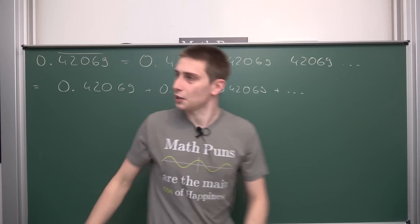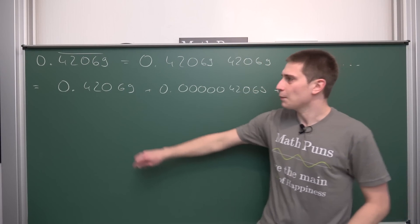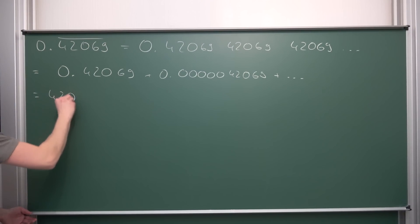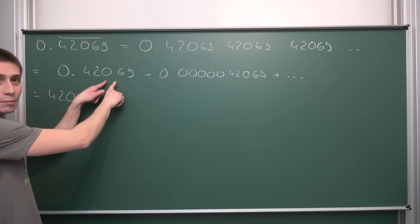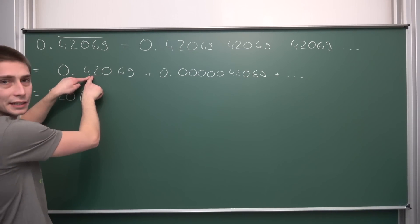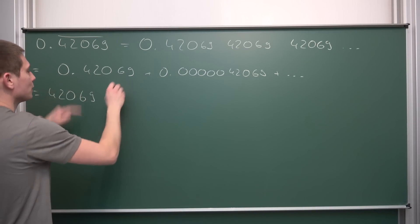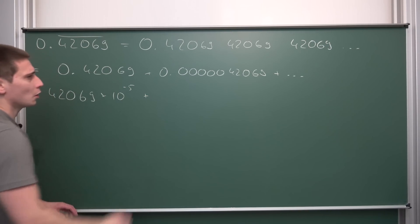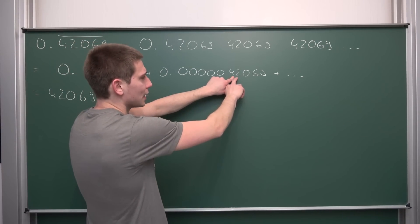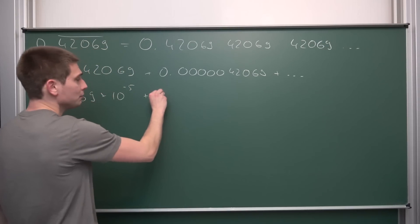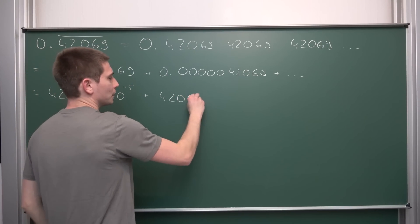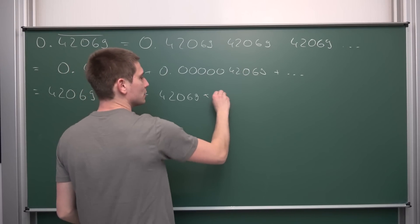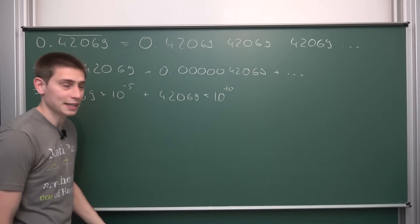Now what is this here exactly, those decimals that we have? What we got here is nothing but 42069, but times 10 to the—how many decimal places do we have? 1, 2, 3, 4, 5—times 10 to the negative fifth power. Plus, next up, this is nothing other than 42069 times, up until the 10th place, times 10 to the negative 10th power.